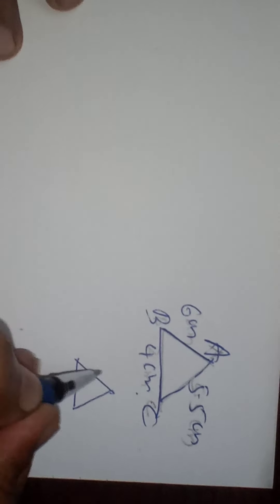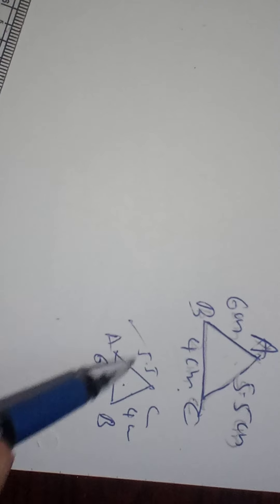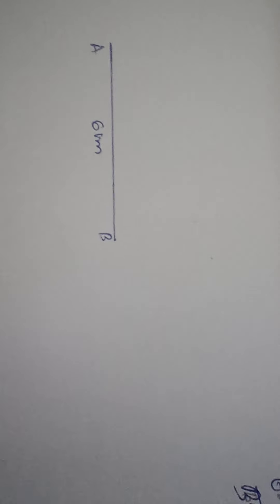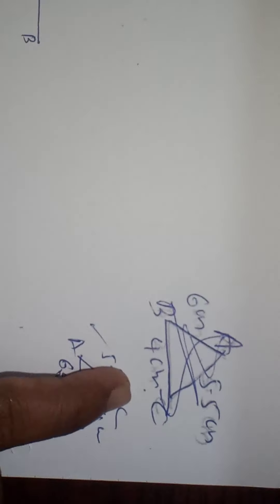Using the rough figure you can draw the actual figure. You can write the name ABC and label the sides. AB equals 6 centimeters, BC equals 4 centimeters, CA equals 5.5 centimeters. You can use any one as a rough figure and construct according to it. First take the base AB as 6 centimeters — use scale and pencil only. Draw the baseline of 6 centimeters and label it AB. Now for the next step, take AC and BC: AC is 5.5.